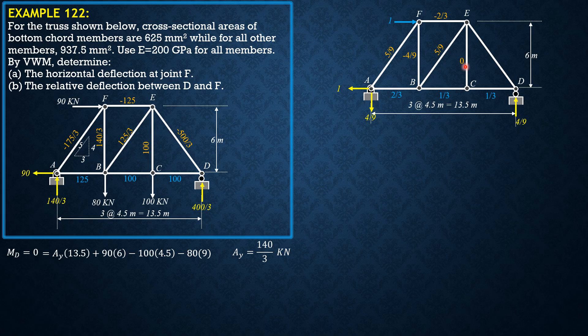With member CE being a zero-force member, the number of members to tabulate reduces from 9 to 8. At joint D, summation of forces Y gives negative 5 over 9 for DE. Check summation of forces X at joint D to validate. Then check joint E: summation of forces X and summation of forces Y should both equal 0. Do not directly assume 0 — verify using the forces already found.